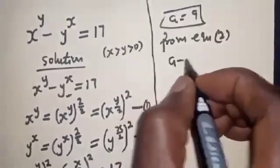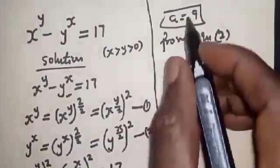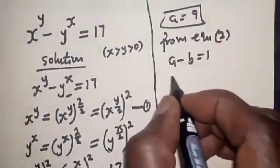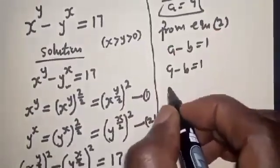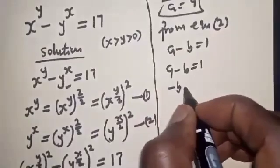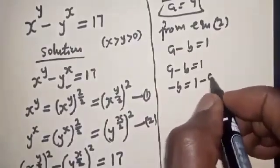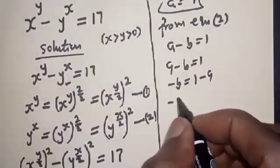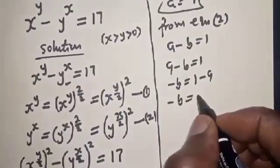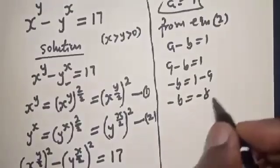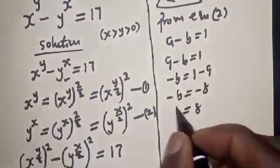From equation 4, a minus b is equal to 1. When a is 9, we have 9 minus b equals 1, so minus b equals 1 minus 9, which gives minus b equals minus 8. Therefore b is equal to 8.